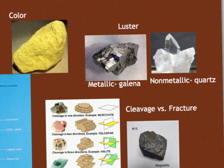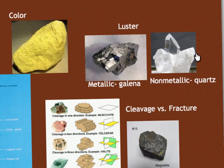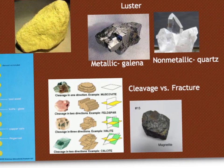Next up is luster. Luster can either be metallic or non-metallic. If it's metallic, that means it reflects light like a metal would — galena would be an example of a metallic luster. A non-metallic luster would be anything that's not metallic, and that could be divided into glassy, earthy, or pearly. Quartz would be glassy, or vitreous as it's also represented.